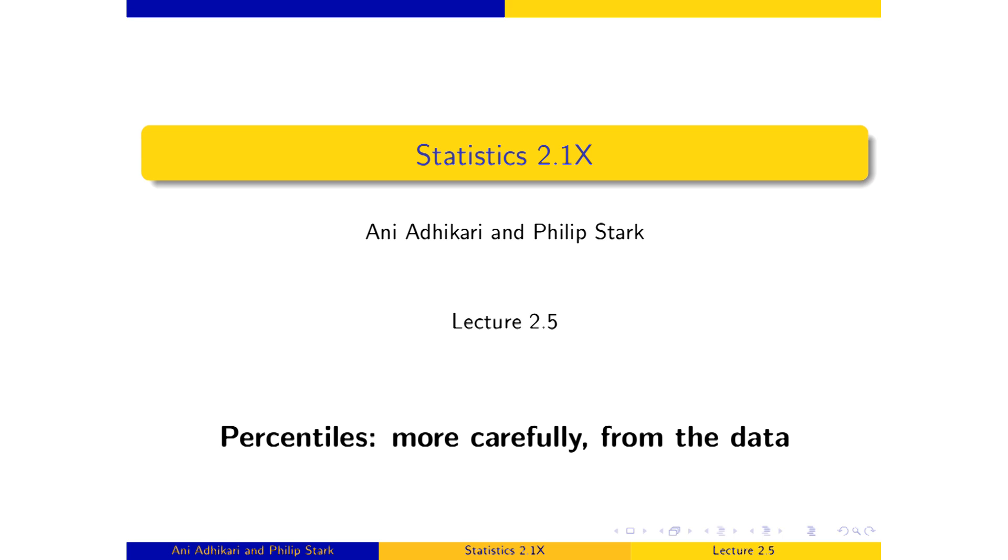In the last segment, we studied percentiles, what they were and how to find them. We approximated them from histograms, assuming individuals were uniformly distributed within bars, and we said that assumption isn't necessarily always sensible. So it's a good idea to know how to find percentiles directly if you have the entire list of numbers, just to be on the safe side.